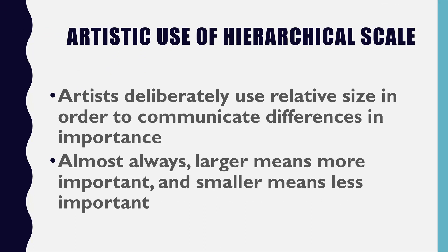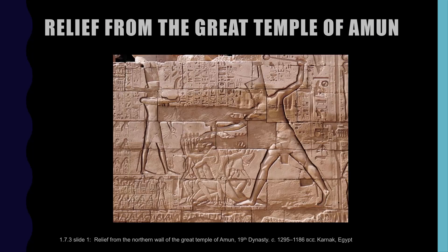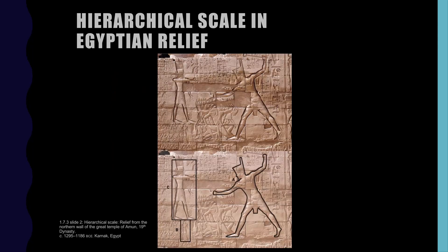Now we're going to look at hierarchical scaling. In this relief, the figure that is the largest is the most important person in the story, the medium-sized figures are somewhat important, and the smaller people are less important. That's all hierarchical scaling is.